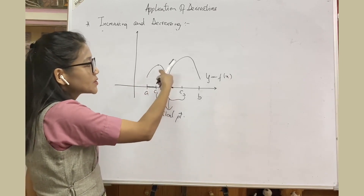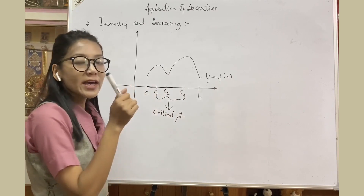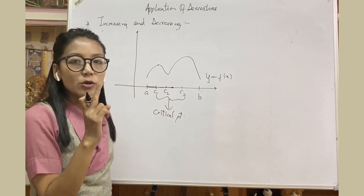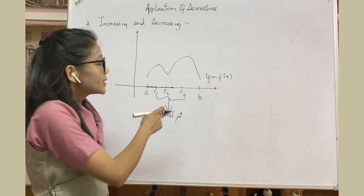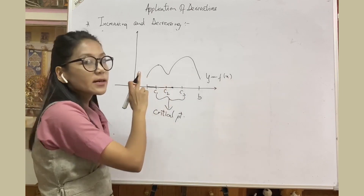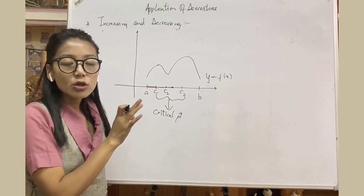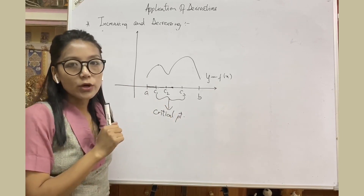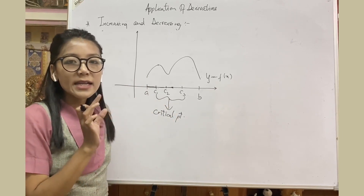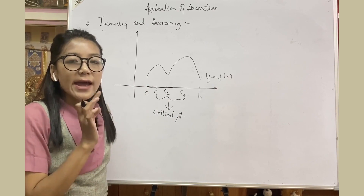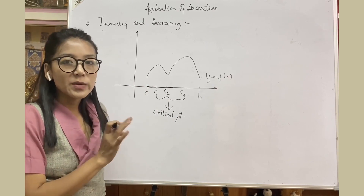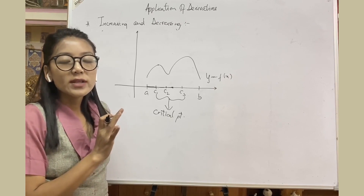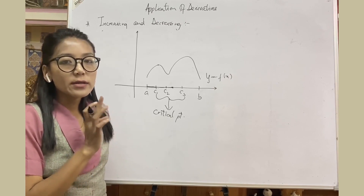Consider another function where the function is increasing, then decreasing, then increasing again, then decreasing — so therefore this function is neither increasing nor decreasing. In this case, how about the critical points? From the start it is increasing; by reaching c1 it starts decreasing. Between c1 and c2 the function is decreasing; by reaching c2 it starts increasing. And then at c3 the function starts decreasing. So we get three critical points. Critical point simply means any point within the interval at which the function is changing its behavior.